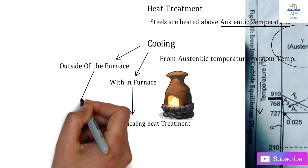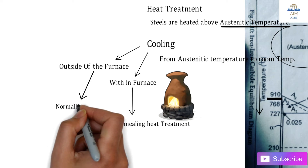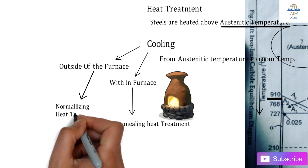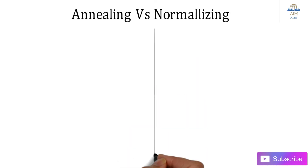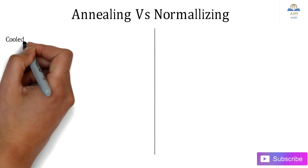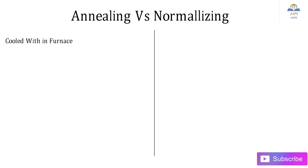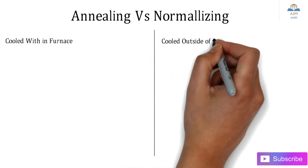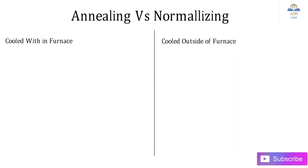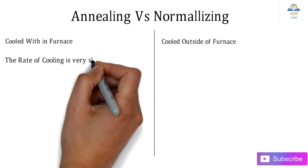Cooling within the furnace is carried out in the annealing heat treatment process, while cooling outside the furnace is the normalizing process. So the first differentiating point is: annealing uses cooling within the furnace, whereas normalizing uses cooling outside the furnace.